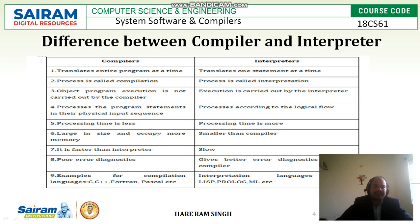Sixth difference: the compiler is large in size and occupies more memory, whereas the interpreter is small software and occupies less space. Seventh difference: the compiler is faster than the interpreter. Eighth difference: the compiler has poor error diagnostics, while the interpreter gives better error diagnostics than the compiler. Ninth difference: examples of compiled languages are C, C++, Fortran, and Pascal; interpreter languages include Lisp, Prolog, ML, and others.